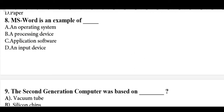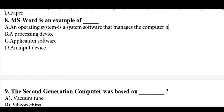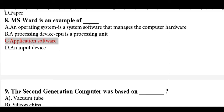MS Word is an example of what? An operating system is system software that manages computer hardware — not related to MS Word. A processing device interprets and manipulates data — for example, the CPU — also not related to MS Word. Application software includes all applications such as MS Word and MS Access. The correct answer is option C: application software.